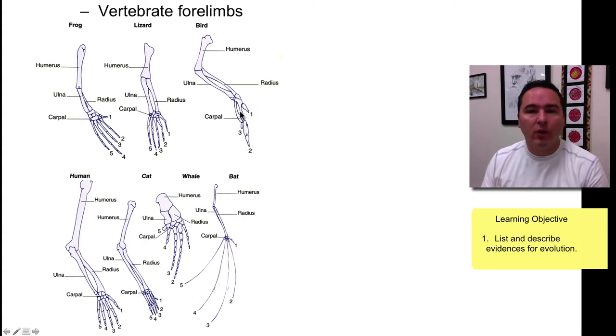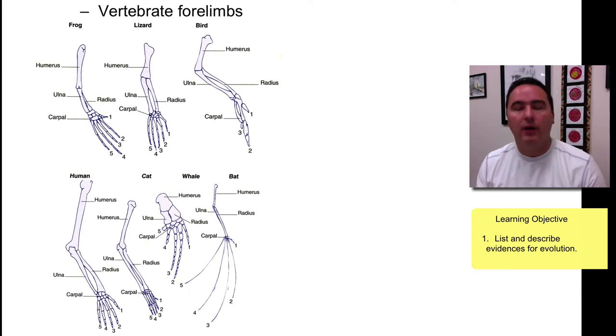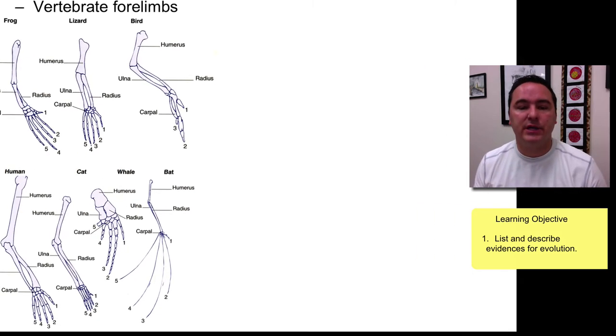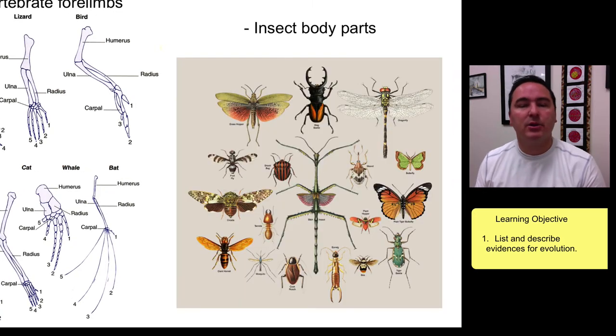But the overall pattern is the same. How do you explain that? Well, all of these organisms come from a common ancestor and then evolved into each of the different forms. A similar story could be told for insects: why do all insects have three body parts, six legs, one pair of antennae? Because their common ancestor had that same body plan.